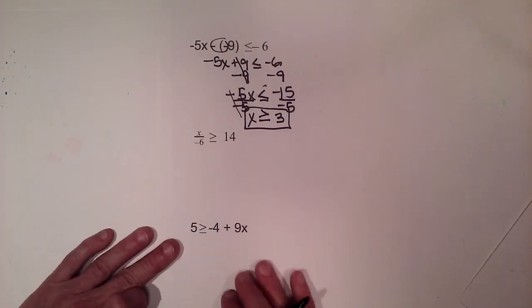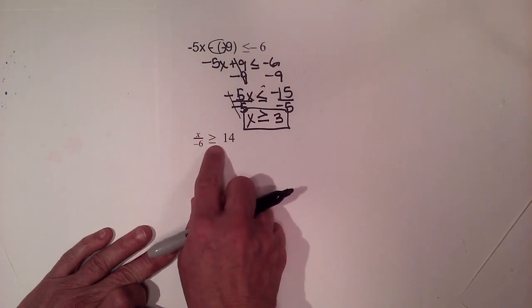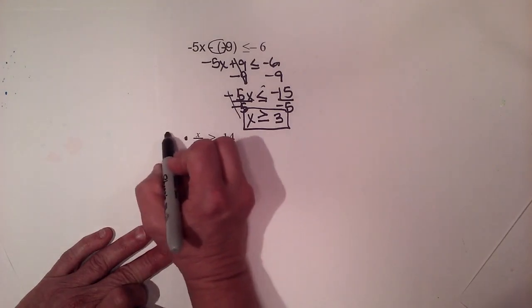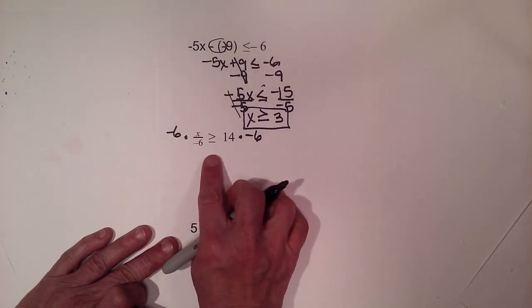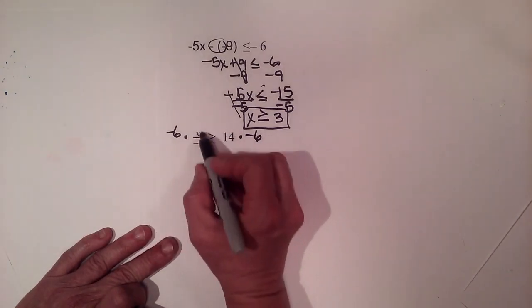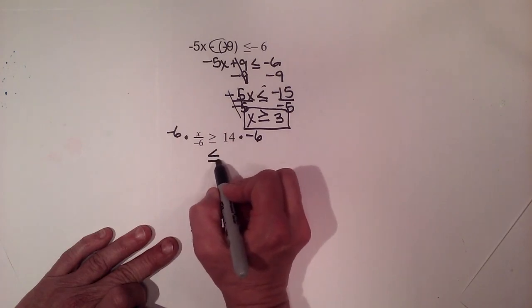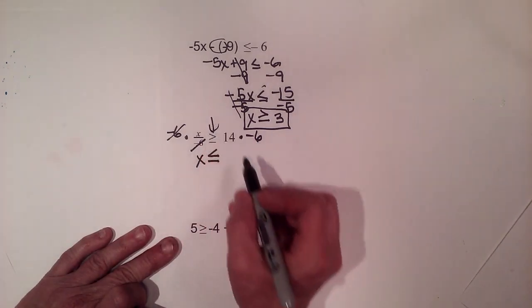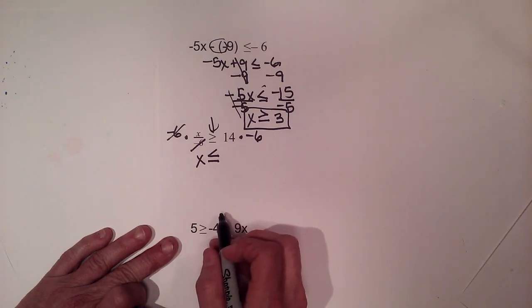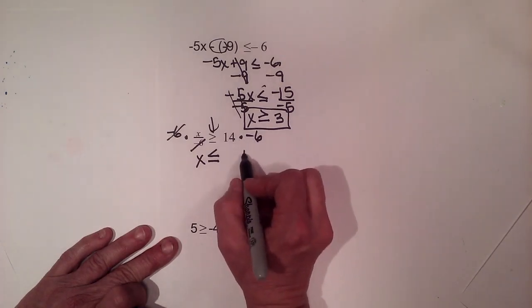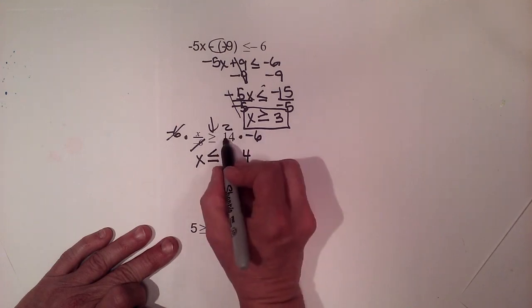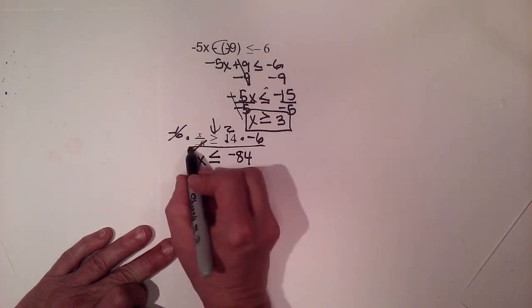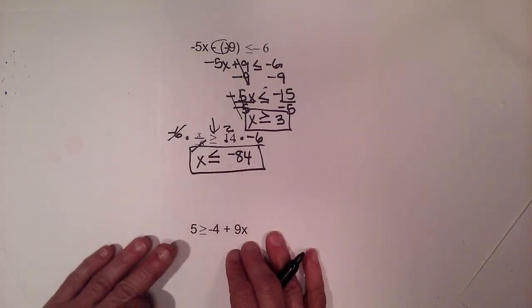We have x divided by negative six is greater than or equal to fourteen. To undo the division, we multiply both sides by negative six. Since we're multiplying by a negative on the last step, we flip the inequality to less than or equal to. The negative sixes cancel, and negative six times fourteen — six times four is twenty-four, carry the two; six times one is six plus two is eight — with a positive times a negative giving a negative. So x is less than or equal to negative eighty-four.